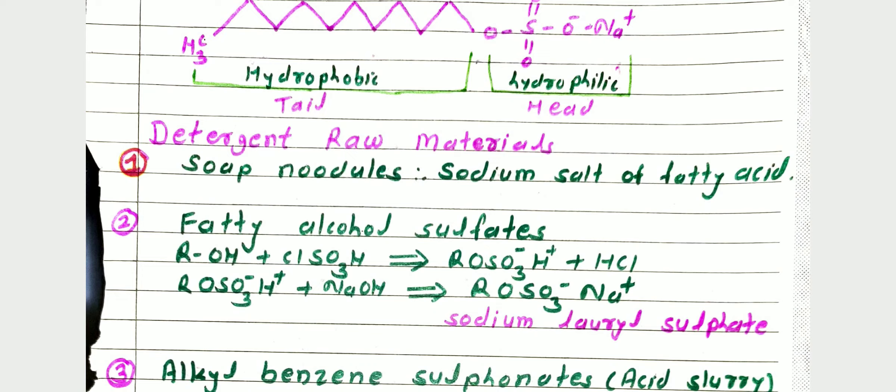The intermediate RO-SO₃⁻H⁺ again reacts with a base. Taking NaOH, the reaction with sodium hydroxide forms RO-SO₃⁻Na⁺. This compound is called sodium lauryl sulfate, which is an example of a detergent.